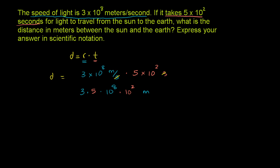So what's this going to be? So you have a 3 times a 5 right here. That's 15. And then you have that being multiplied by 10 to the eighth times 10 squared. That's 10 to the 8 plus 2, or 10 to the 10th power. So the distance is 15 times 10 to the 10th meters.